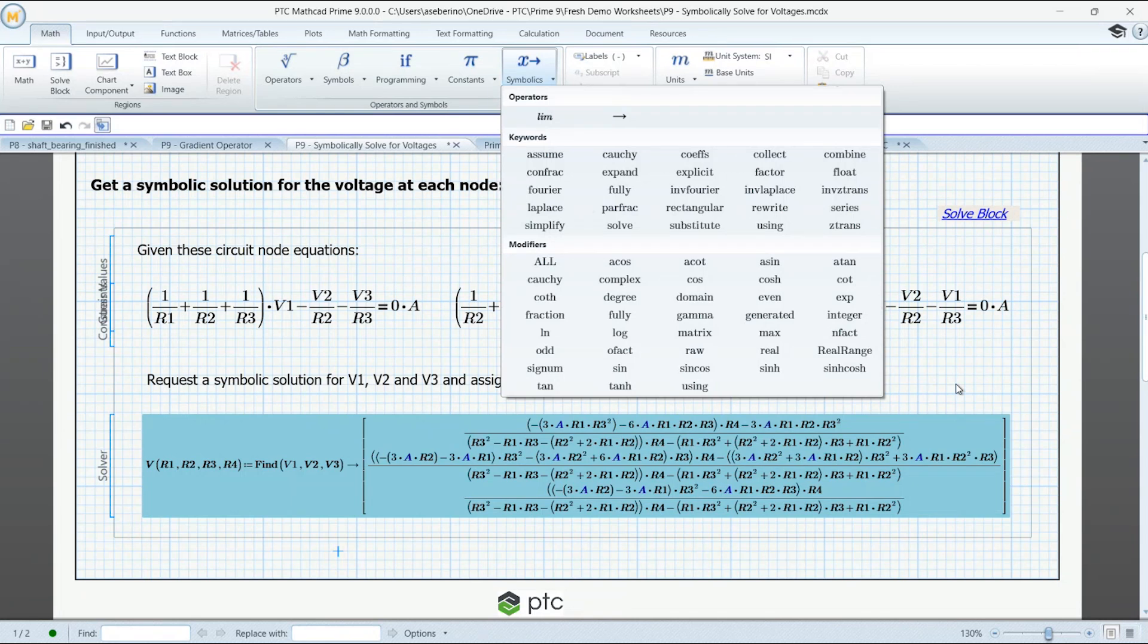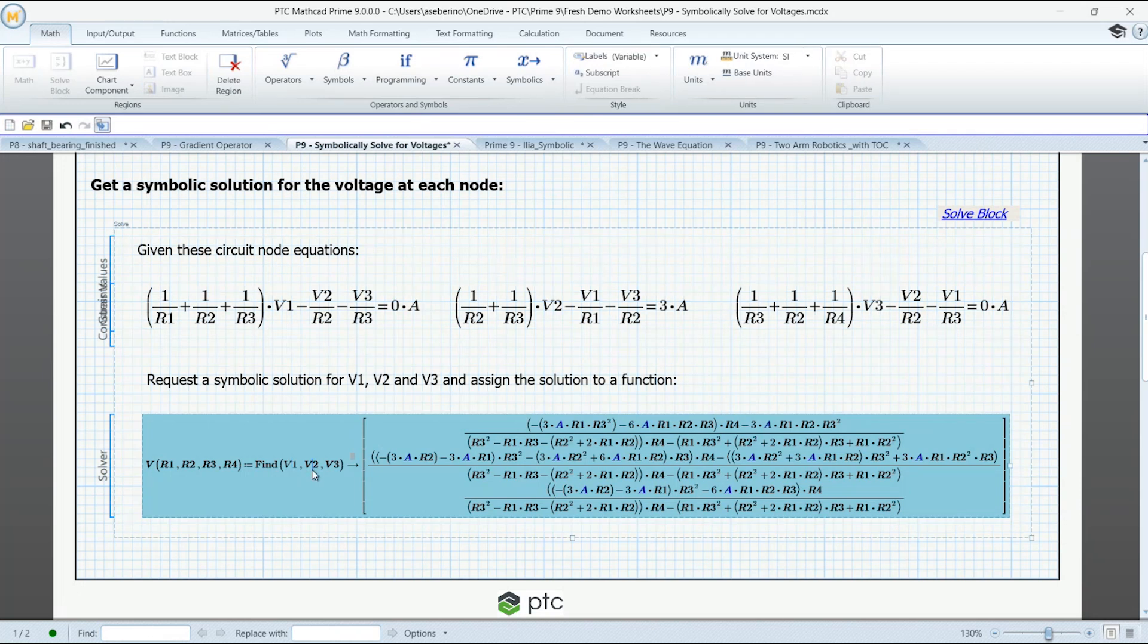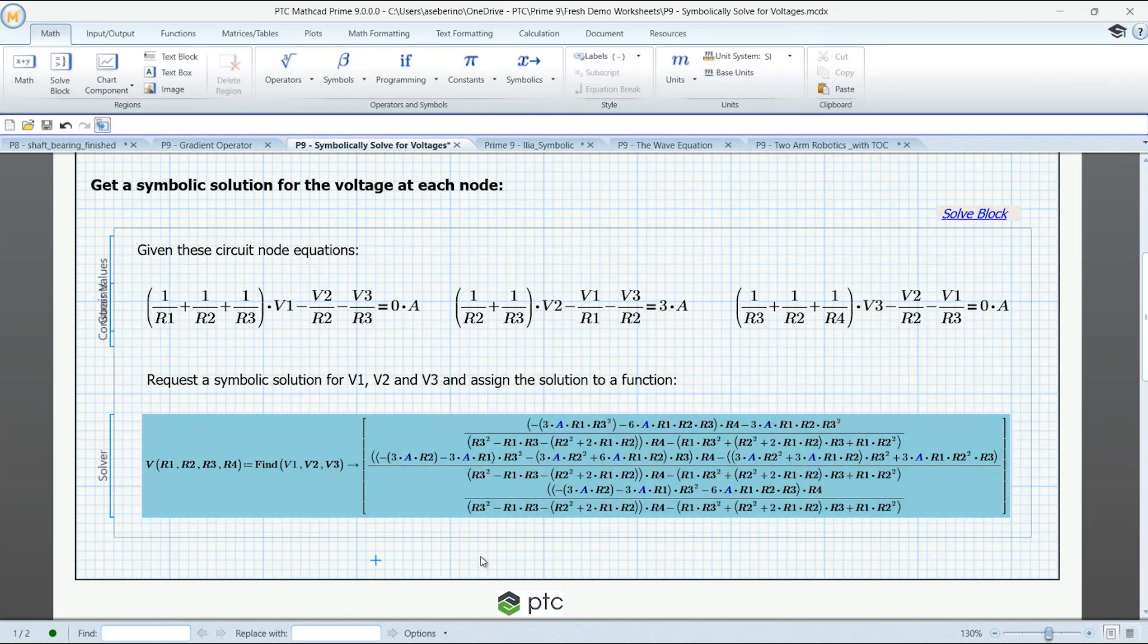If we're just evaluating something symbolically, we just go right here to this arrow. And so here, we're finding a solution. So we're going to use that function find. We're finding a solution for v1, v2, v3, and then we use the symbolic arrow. And on the right hand side, we have the solution.